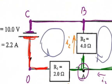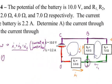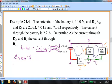Let's start at point A. If I go from point A through resistor R2 in the direction of I2, I am going from a higher potential to a lower potential through R2 when I go with the current. So I'm going to write negative I2 times R2 — that's the potential drop across R2 when I go with the current.